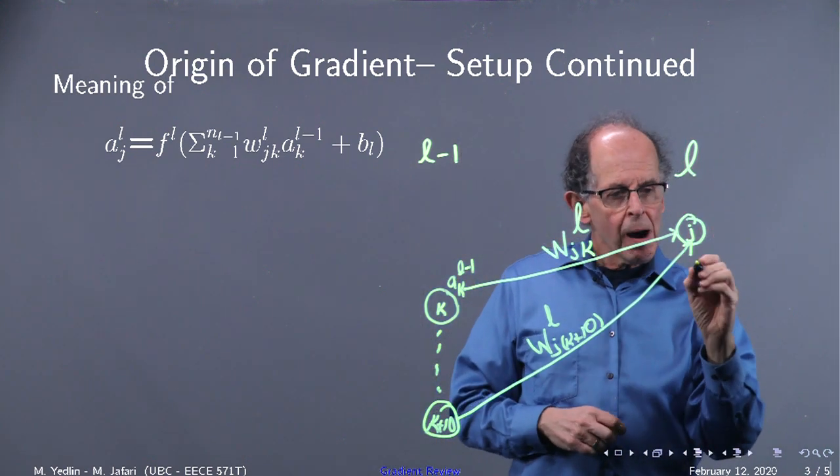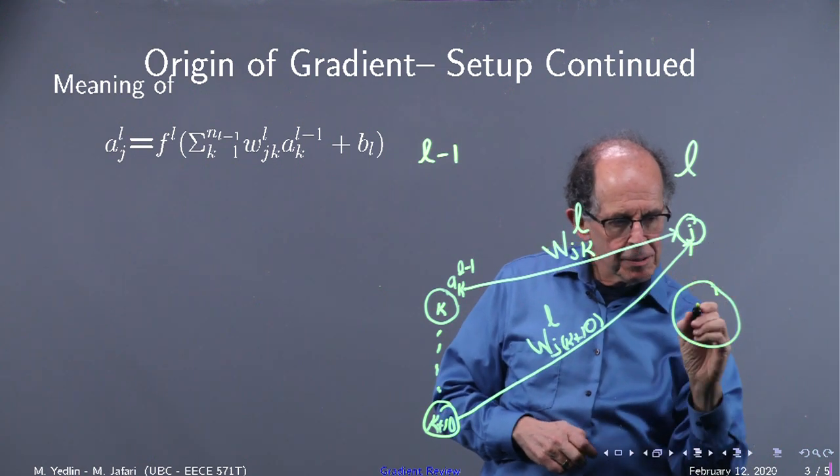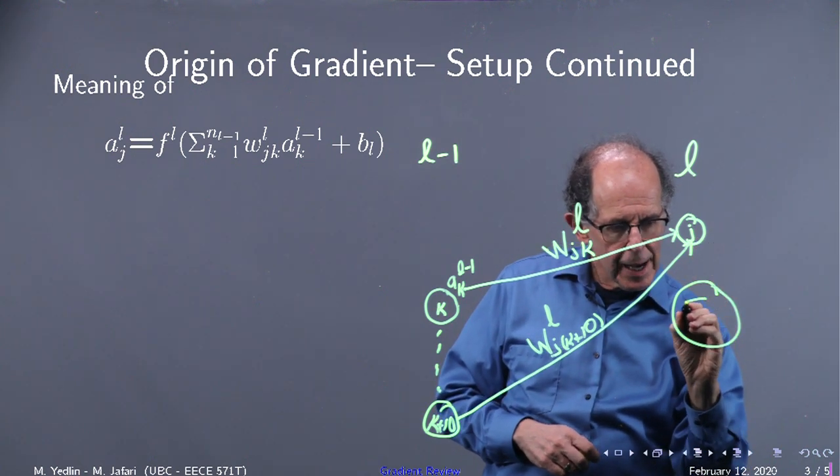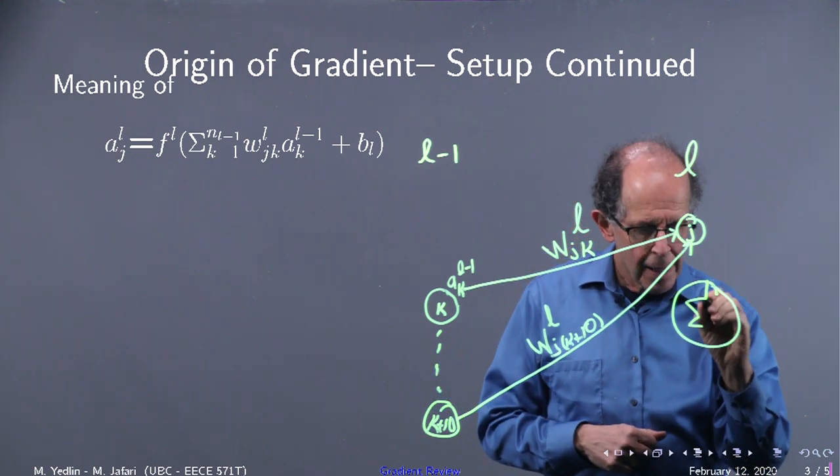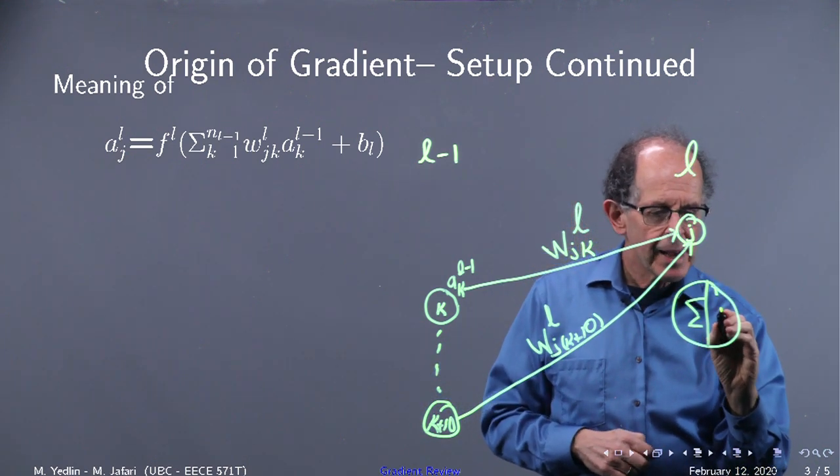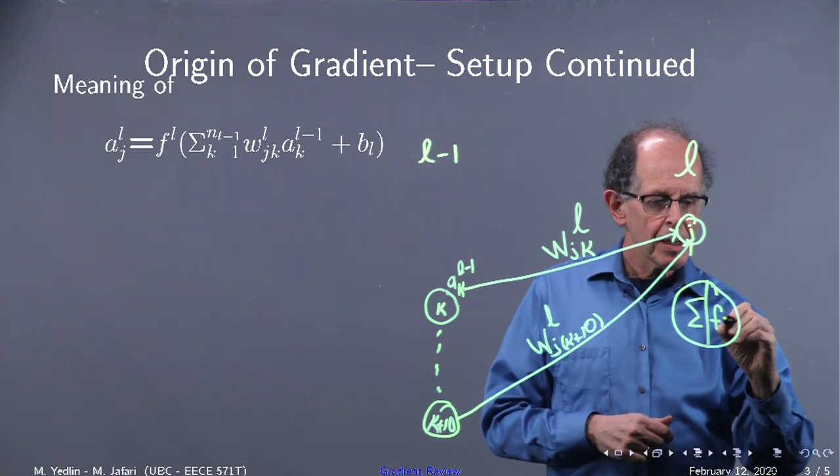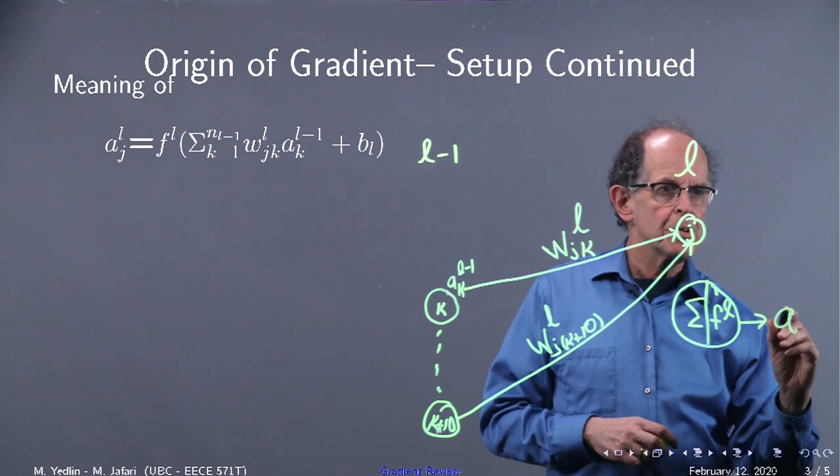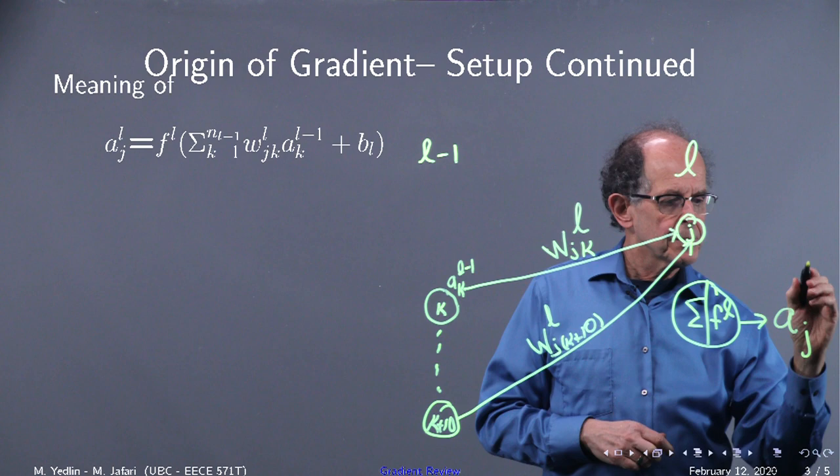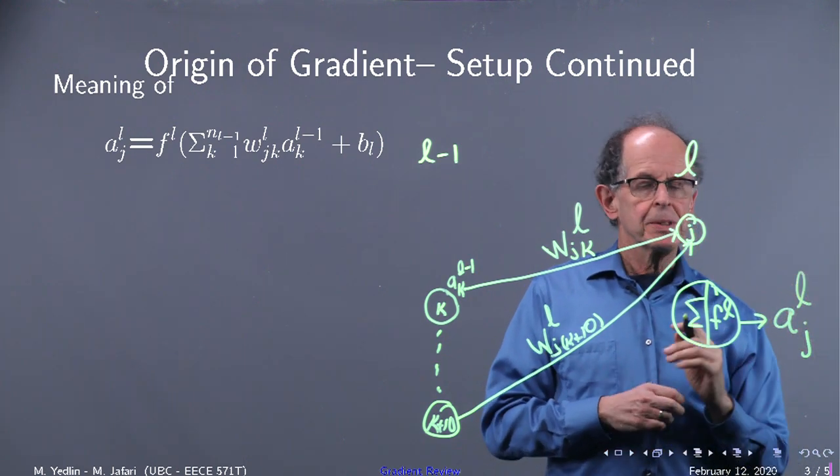Now, symbolically, what we can do is think of this node here for the jth neuron as a summation of all the inputs coming in, and then fed to an activation function f. In this case, f superscript l. And this will give us, for the jth neuron, a sub j superscript l.